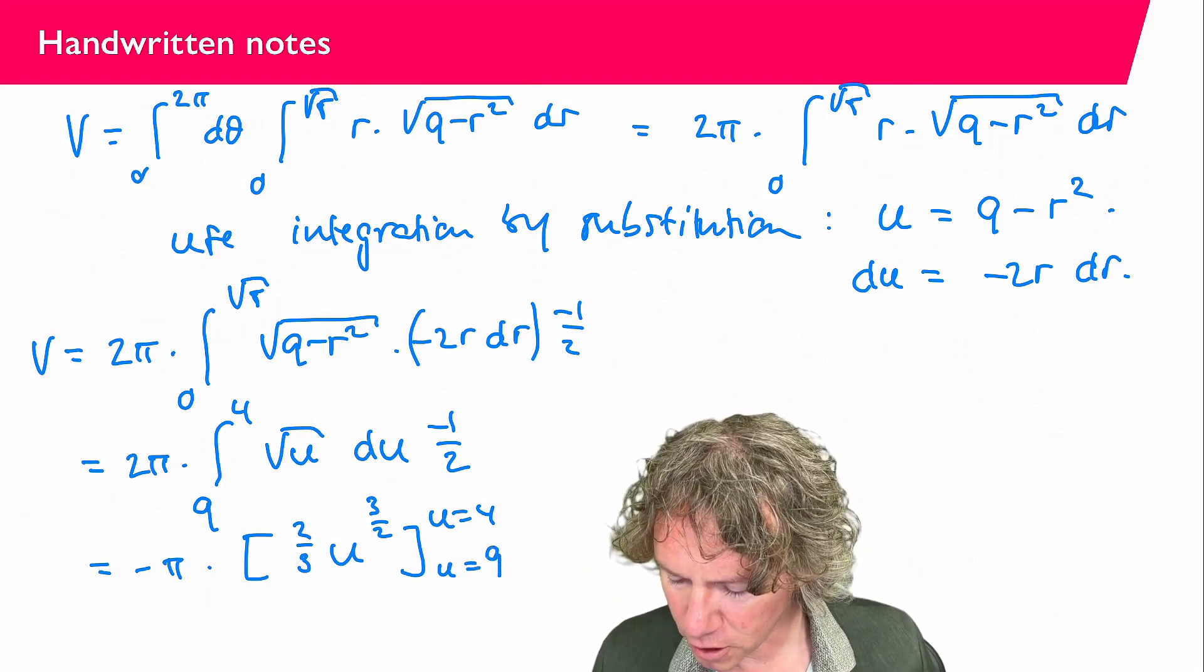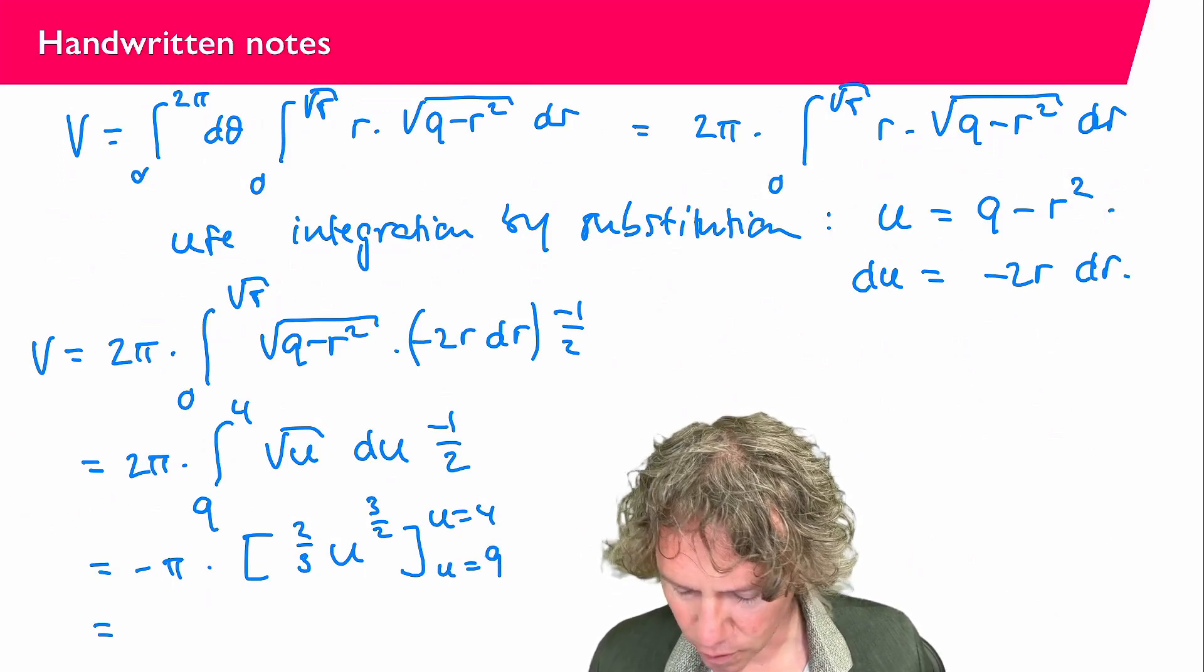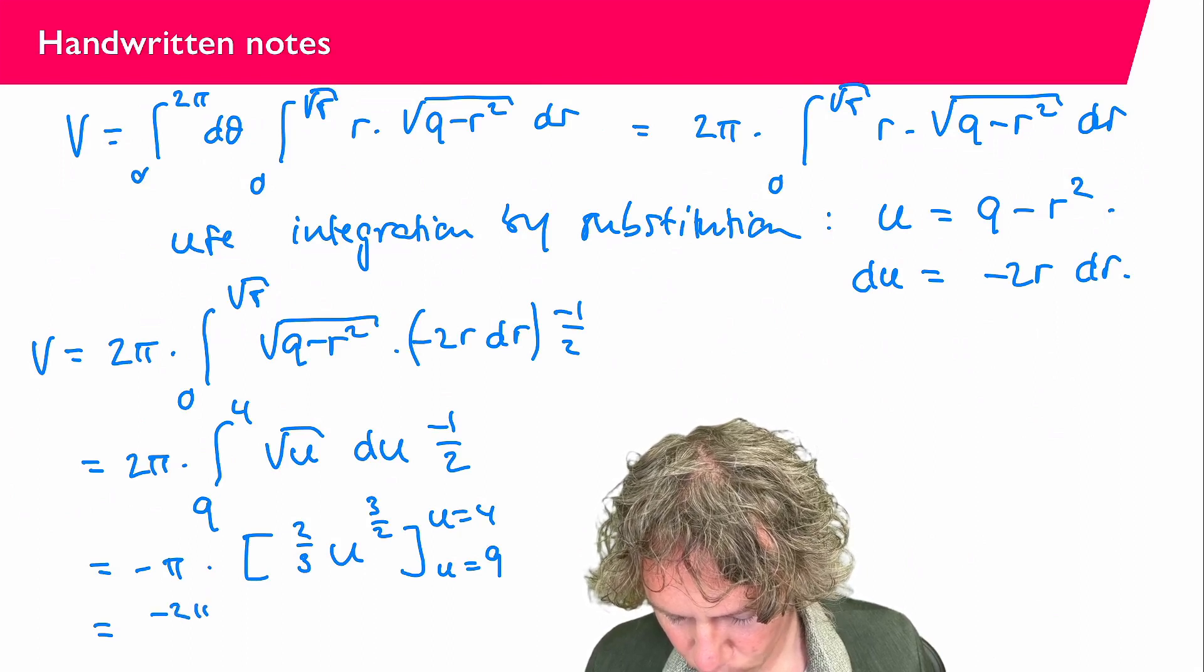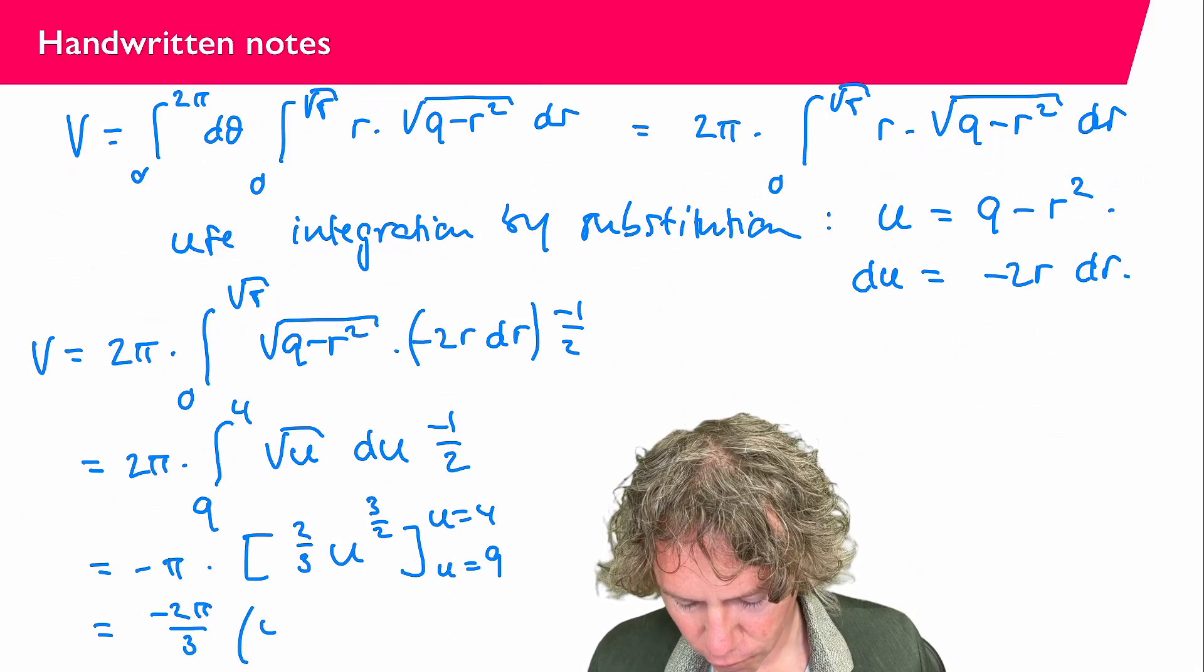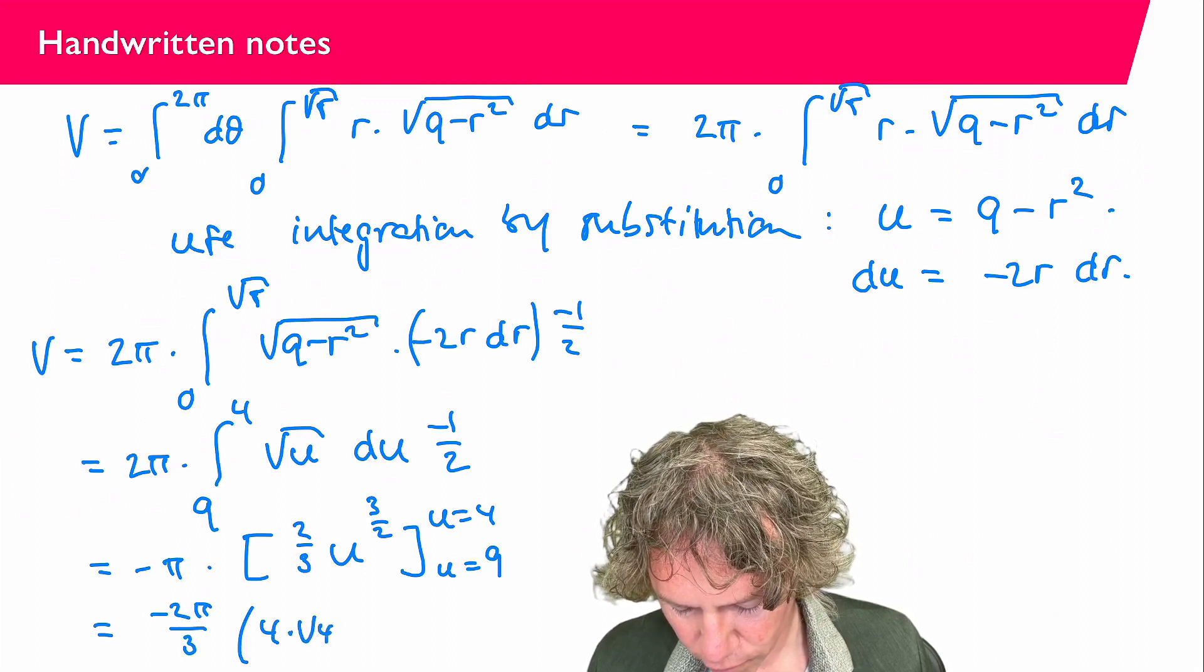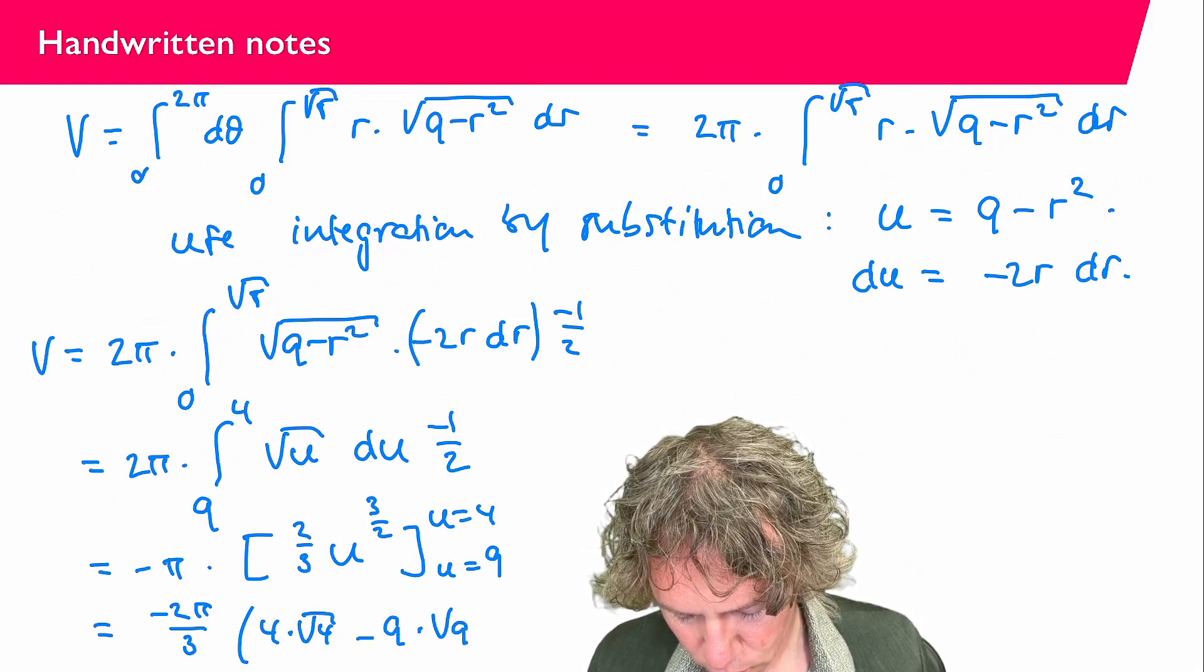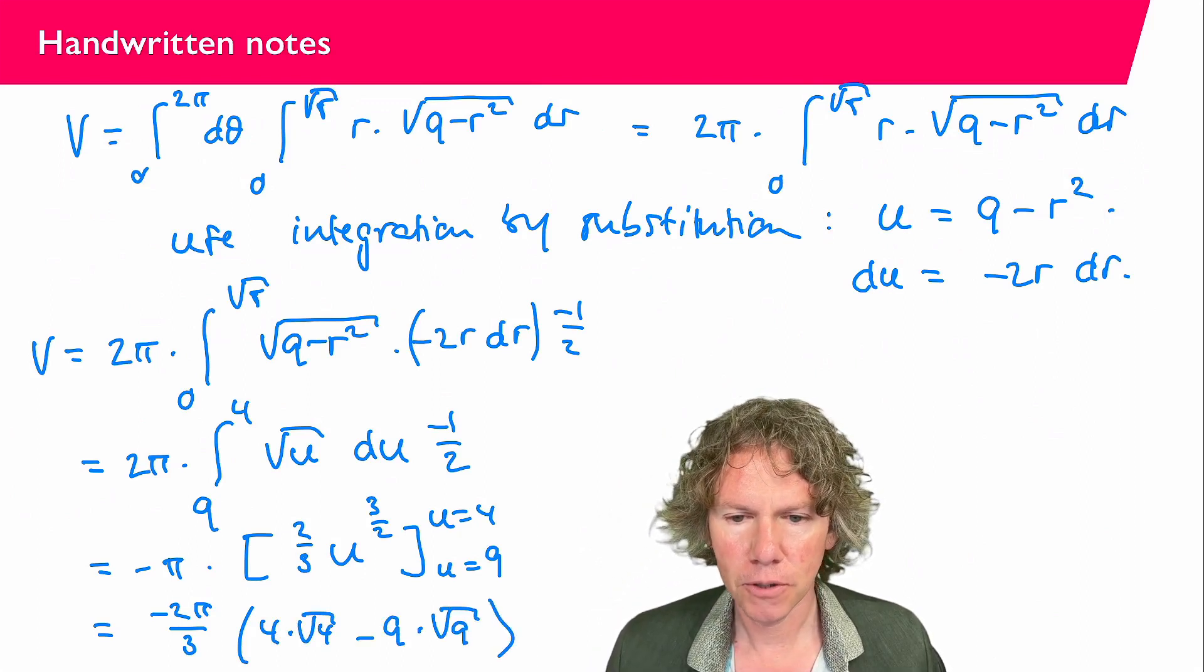And if I plug in these values and I compute this. Then you will find minus 2 pi over 3. 4 times square root of 4. Minus 9 times square root of 9.